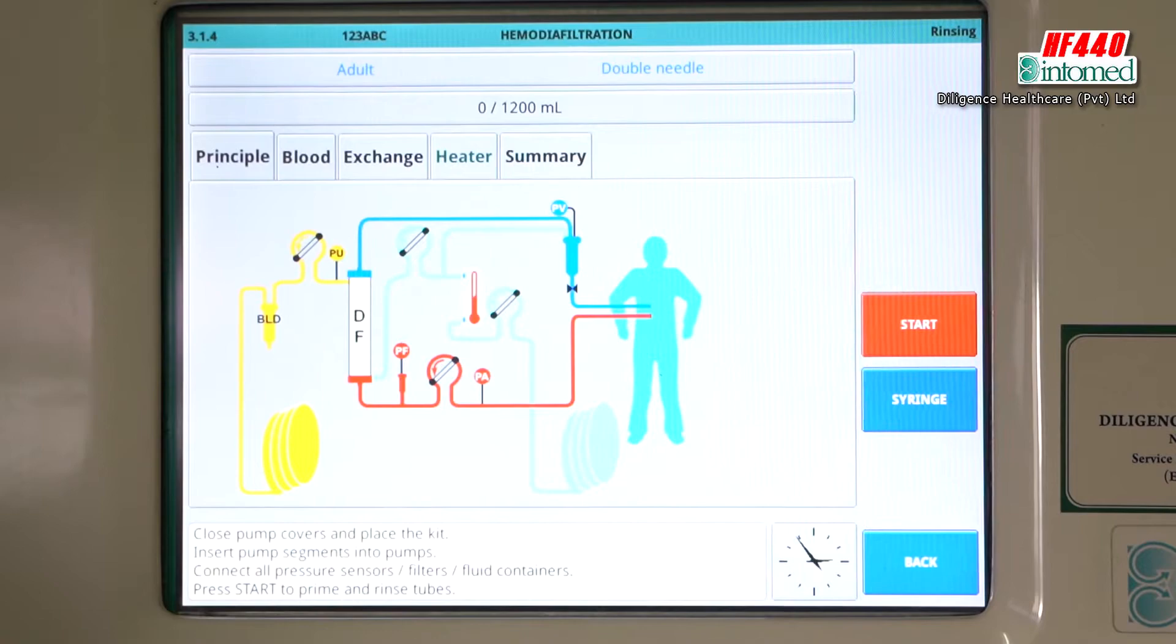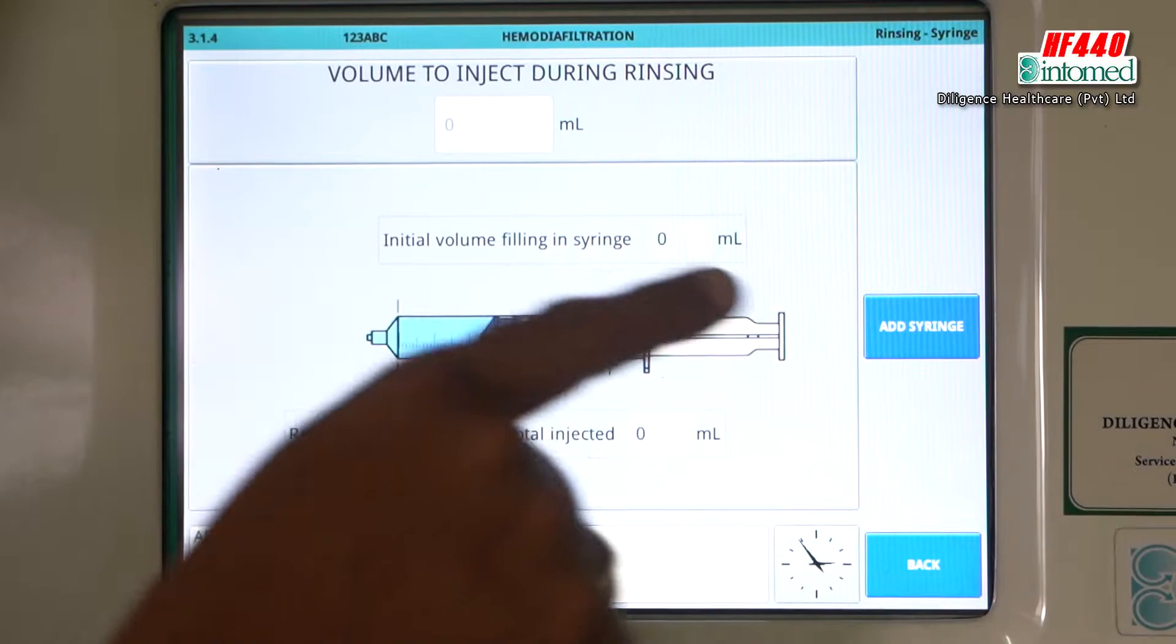Now we have to go to the syringe where we have to fix the syringe. You can see the small tube is there, very tiny tube, then very thin.